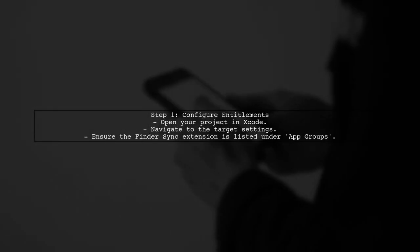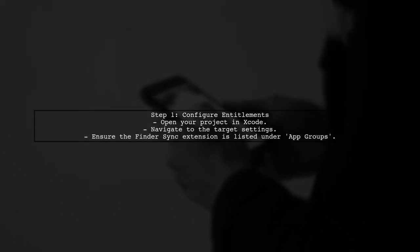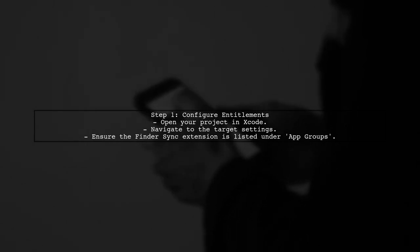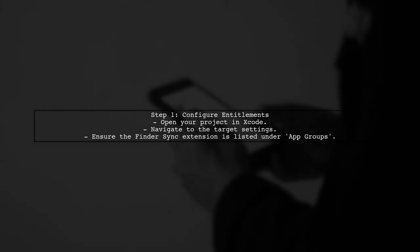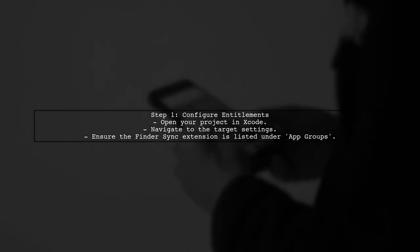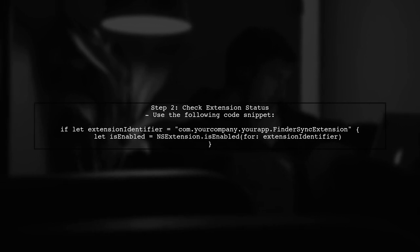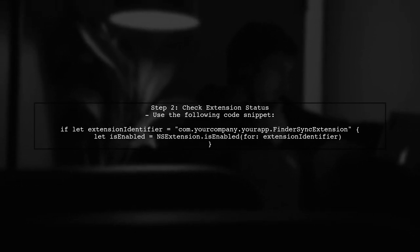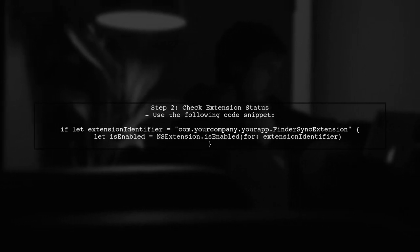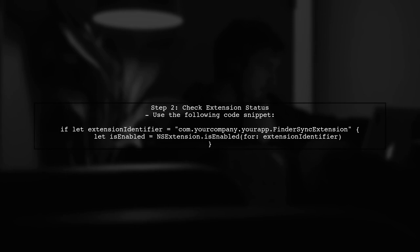To ensure your Finder Sync extension launches automatically with your main Cocoa application, you need to configure your app's entitlements properly. Next, you need to implement the appropriate code in your main application to check if the Finder Sync extension is enabled.